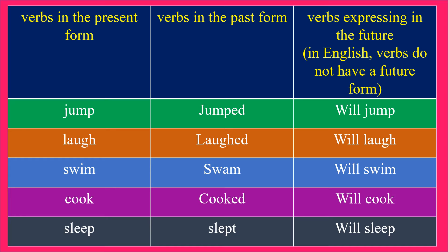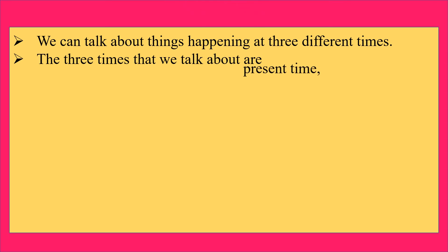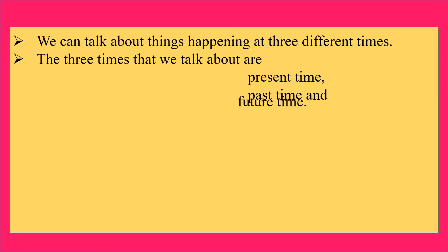We can talk about things happening at three different times. The three times are: present time, past time, and future time. We know that present time means happening at the moment of speaking.